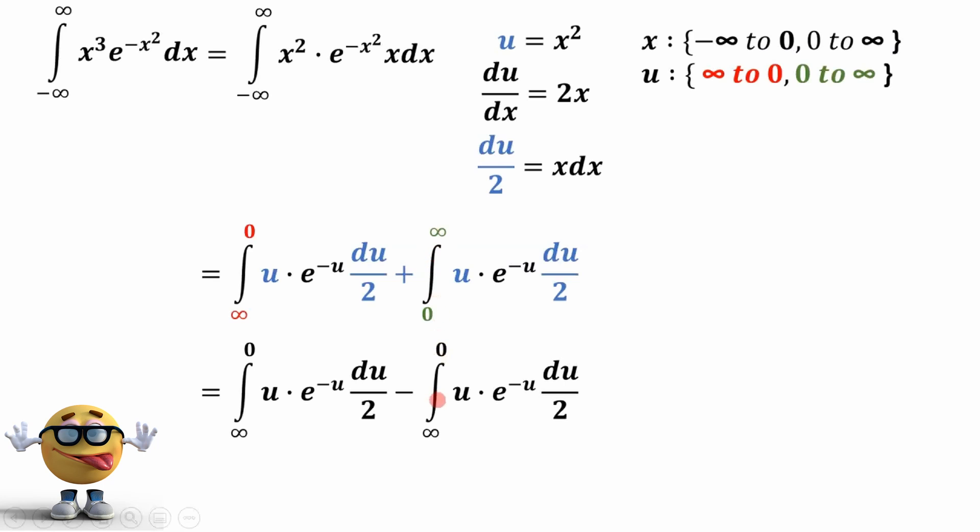And if we flip the limits, you've got to flip the sign as well. And if you check these two terms out, they're literally identical. So if we're subtracting things that are identical, we get 0.